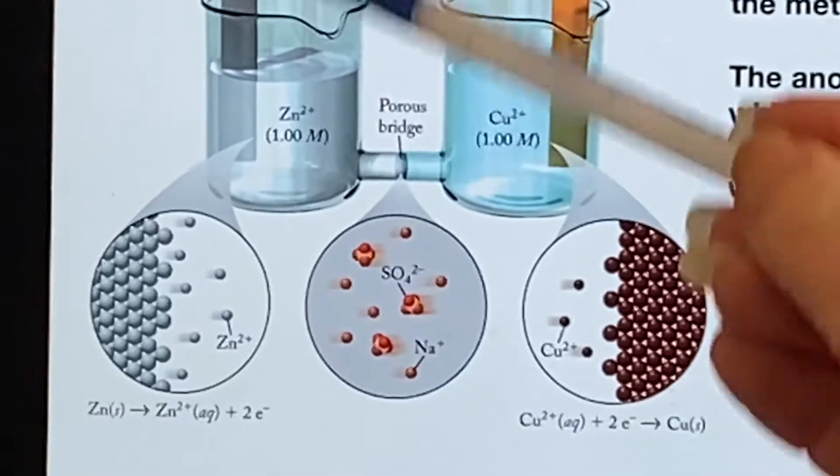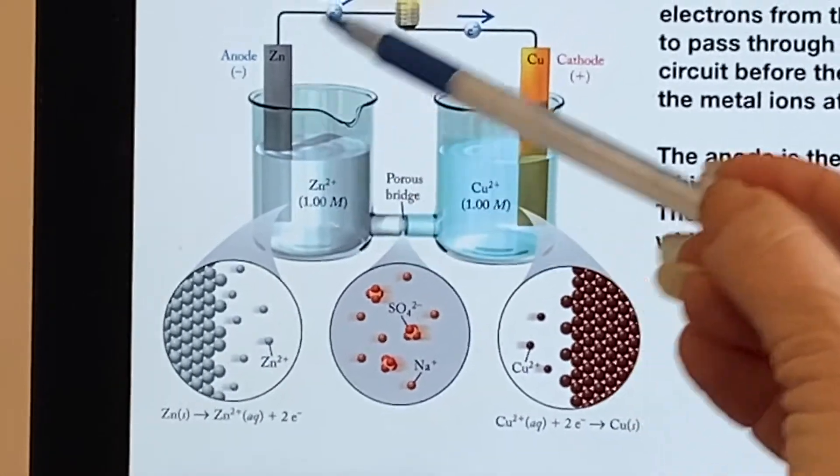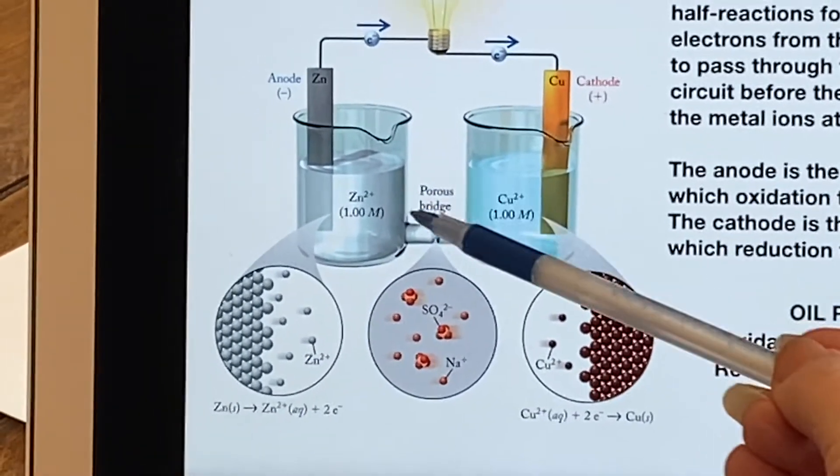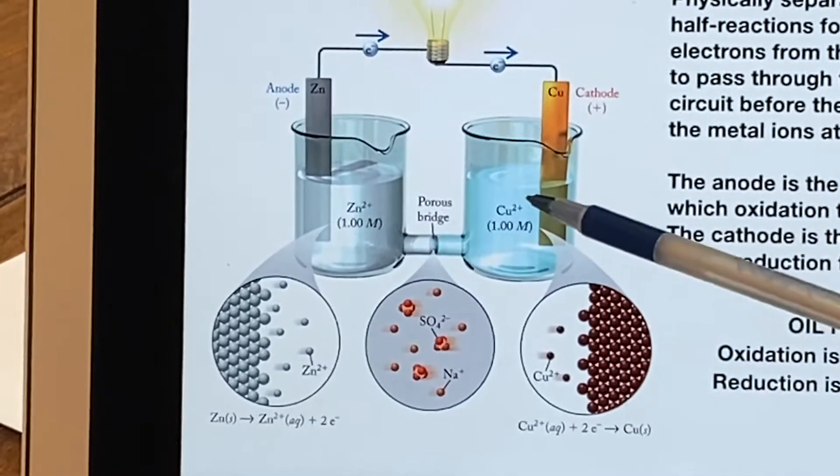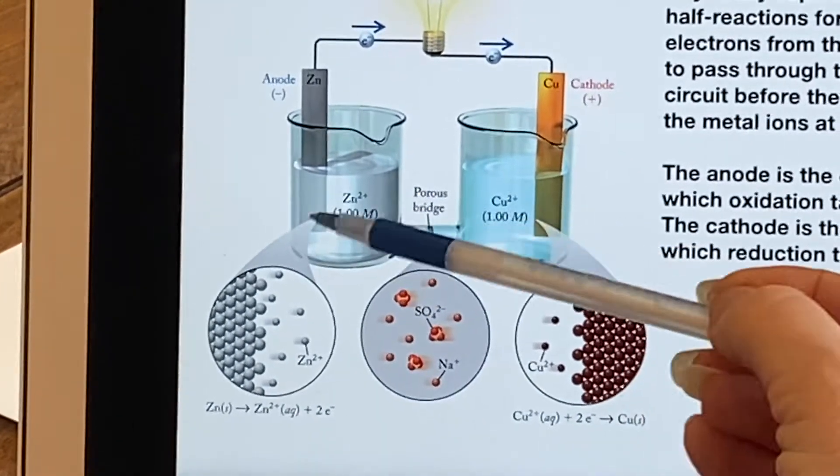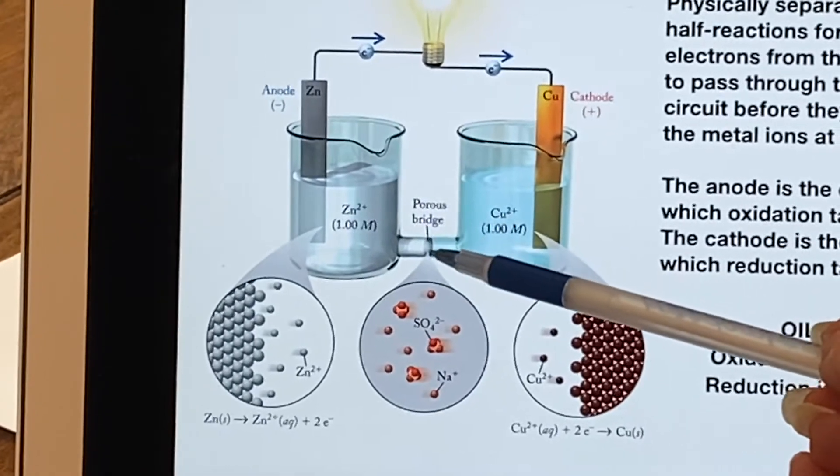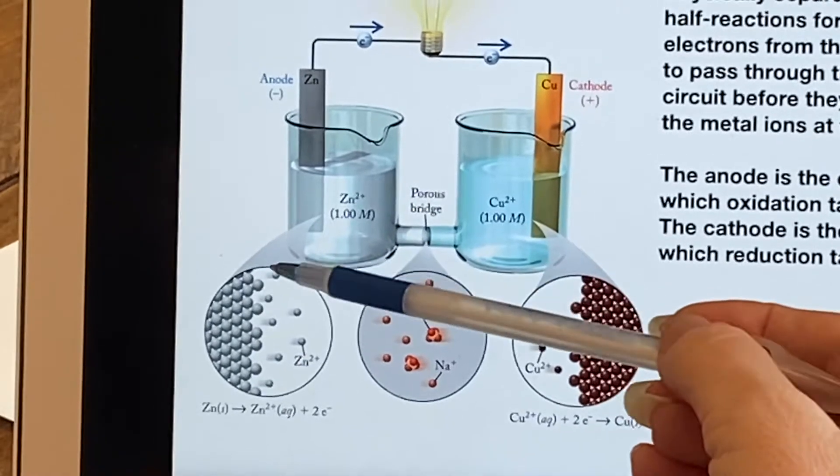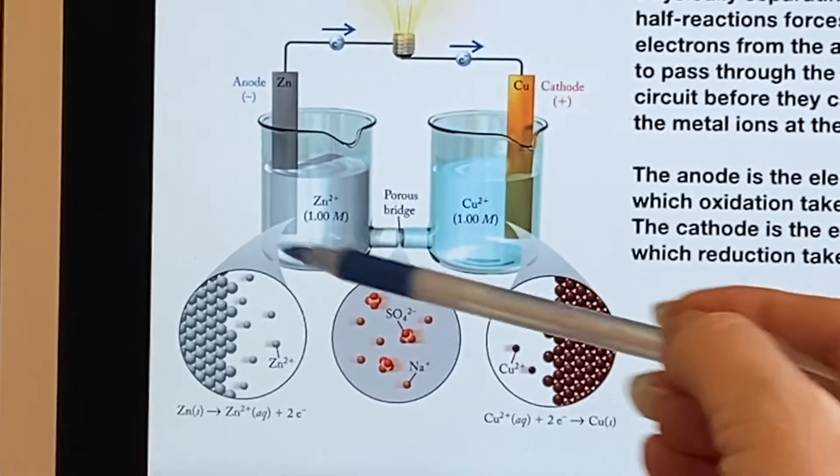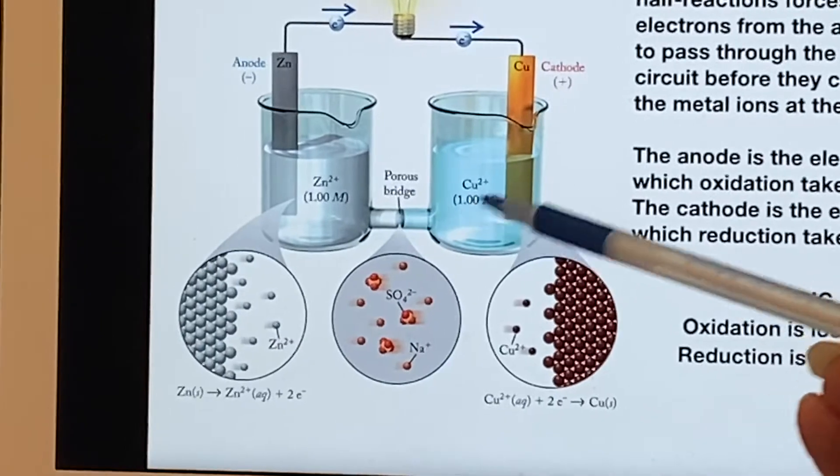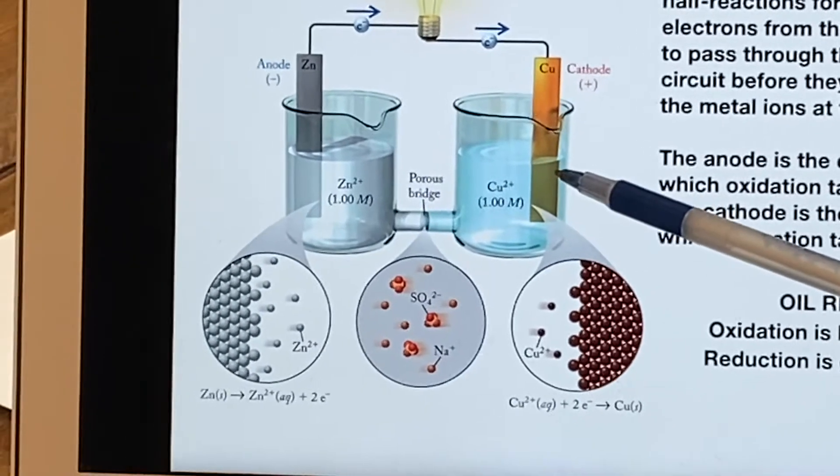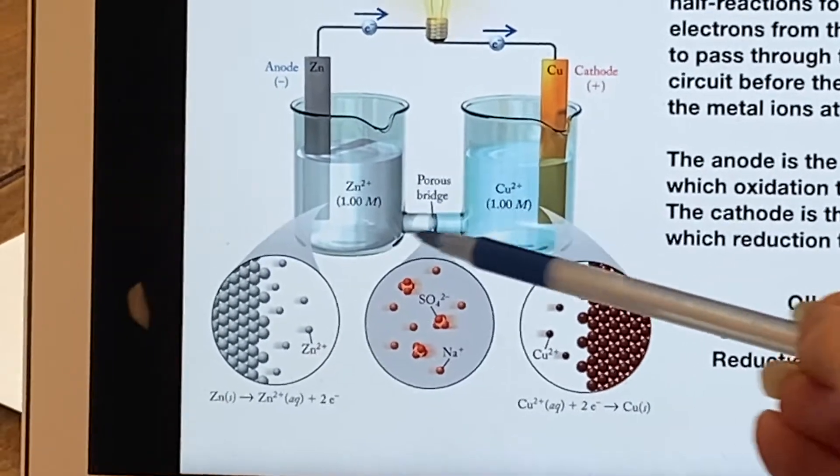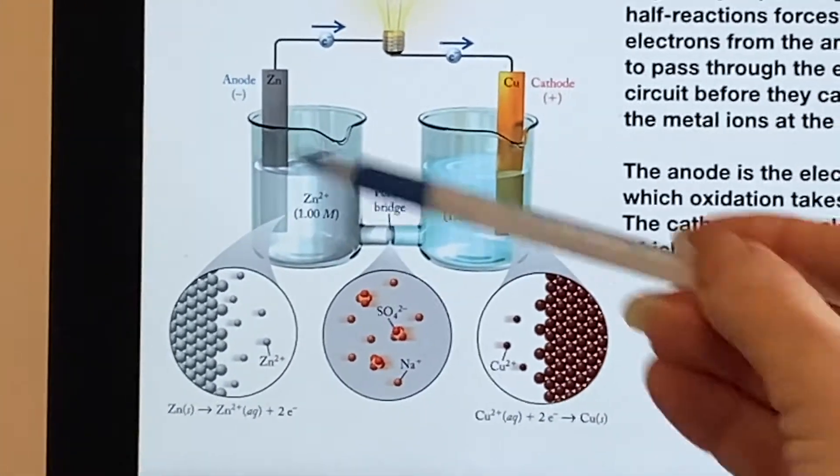But of course, the circuit has to be able to complete itself. So in between here is what they term a porous bridge. And so these are electrons doing this, but it's not electrons moving this way. Instead, what you have are the sulfate ions, which are negative ions that are able to move across and continue this process. The copper plus two is plating out, so they have no reason to stick around. They head over to this side.